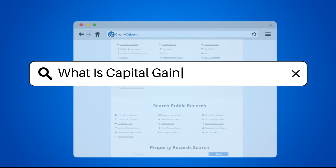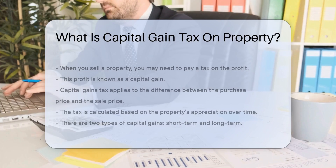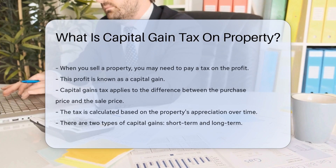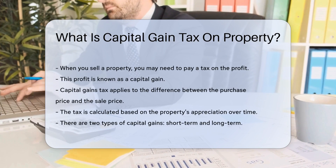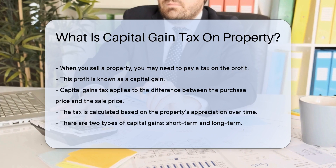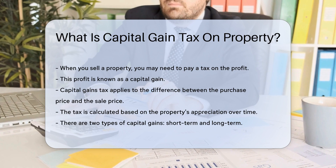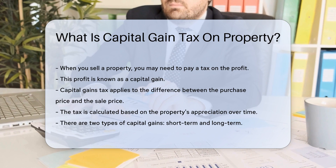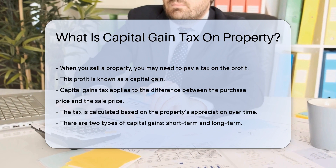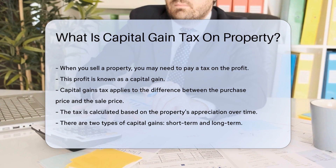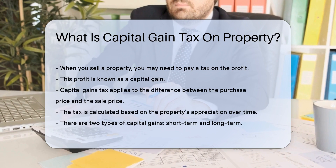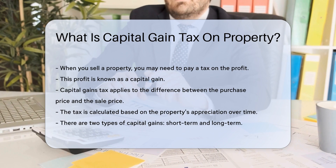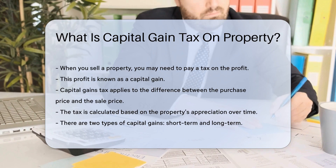What is capital gain tax on property? When you sell a property, you might have to pay a tax on the profit. This profit is known as a capital gain. Capital gains tax applies to the difference between the purchase price and the sale price.